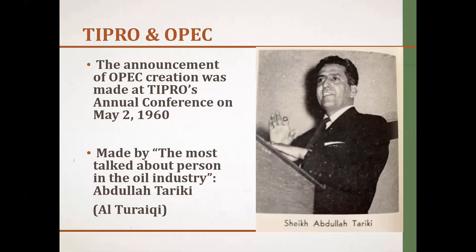Let's get to OPEC. May 2, 1960. Everyone knows — and that's what's in the history books — that OPEC was established by five countries meeting in Baghdad between the 10th and the 14th of September, 1960. But the fact is, the OPEC establishment announcement was made in Tyler, Texas, on May 2, 1960. So the announcement was made in Texas before Baghdad or Cairo or any other Arab cities where the negotiations were taking place.